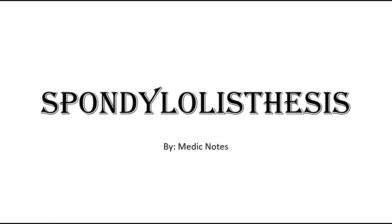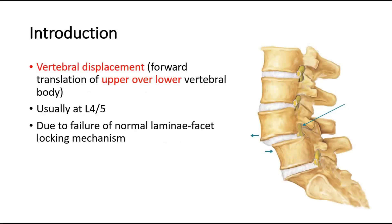Welcome back to another video of Medic Notes. This video will be on spondylolisthesis. It is defined as a vertebral displacement where there is a forward translation of the upper vertebral body over the lower vertebral body, as shown in this picture. It usually occurs at the L4 and L5 region and is due to failure of a normal lamina-facet locking mechanism.